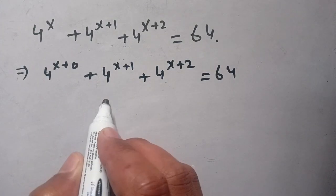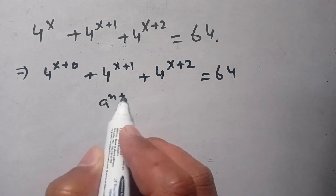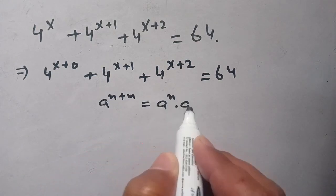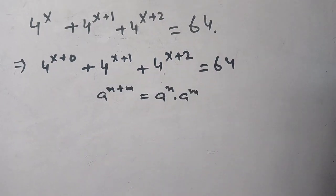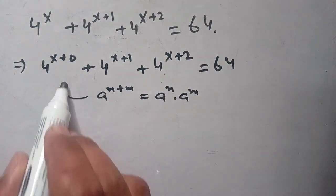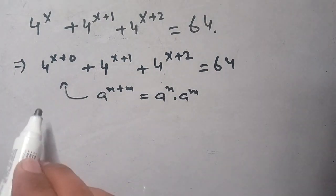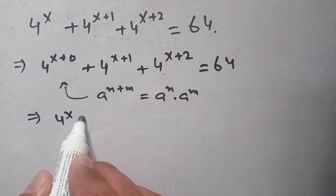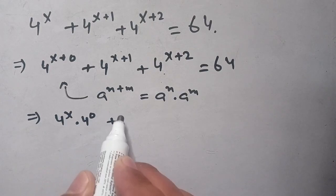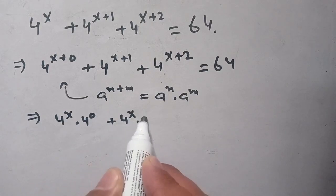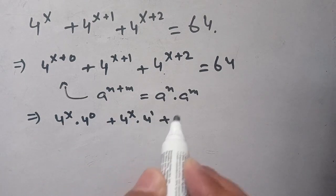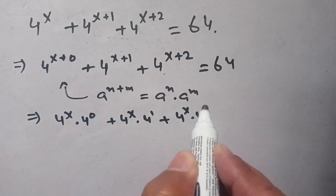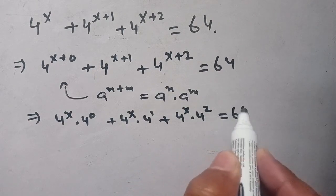In the next step, we know that a^(n+m) is equal to a^n times a^m. We use this identity on each term of our left-hand side to get 4^x times 4^0, plus 4^x times 4^1, plus 4^x times 4^2, all equal to 64.